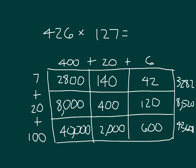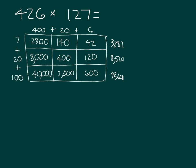Let's compare this against the standard algorithm. 426 times 127, first thing is we work with the 7 ones. 7 times 6, which is 42, write 2, regroup the 4. 7 times 2, which is 14, plus 4, which is 18. Write 8, regroup 1. 7 times 4 hundreds, which is 2,800, plus 1 more 100, is 2,900.